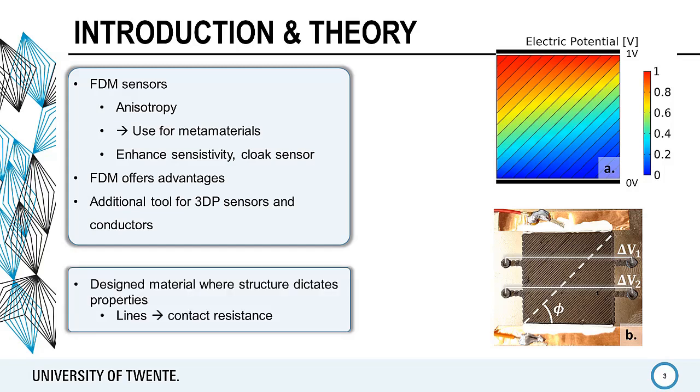A metamaterial is a rationally designed material where the structure dictates the properties. In this research, the electrical properties are dictated by the contact resistance between printed lines instead of by the material resistivity.